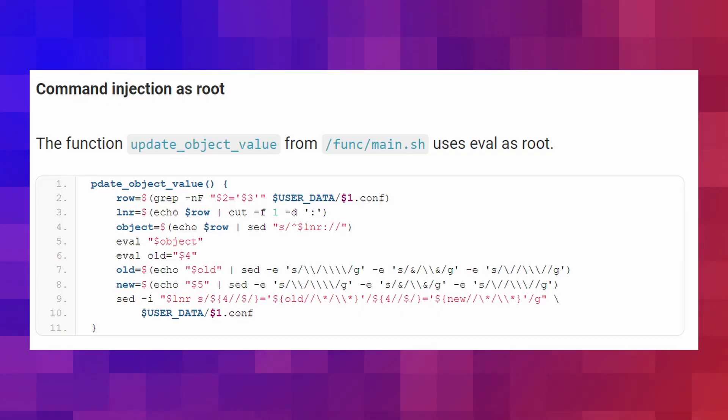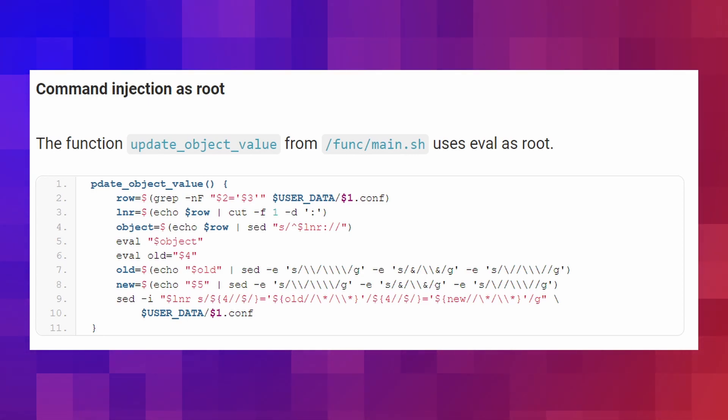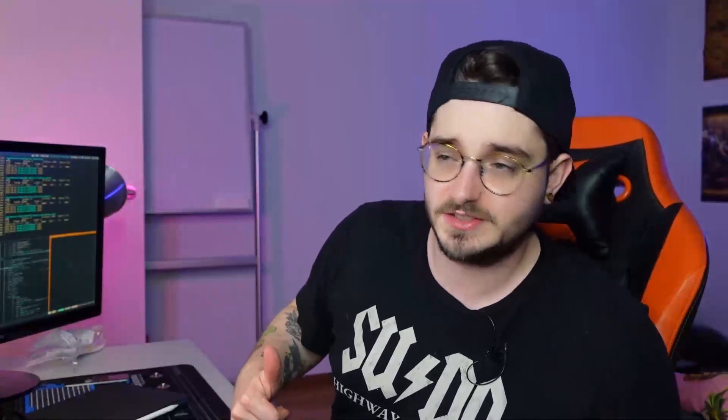One of the most critical vulnerabilities in this chain is a possible command injection as root. This vulnerability is possible thanks to the function update_object_value, which uses eval as root and essentially is the core to run arbitrary code. This eval part can be reached by multiple Vesta features, some of which are email forwards that are not properly sanitized — the perfect entry point for a remote command execution attack.